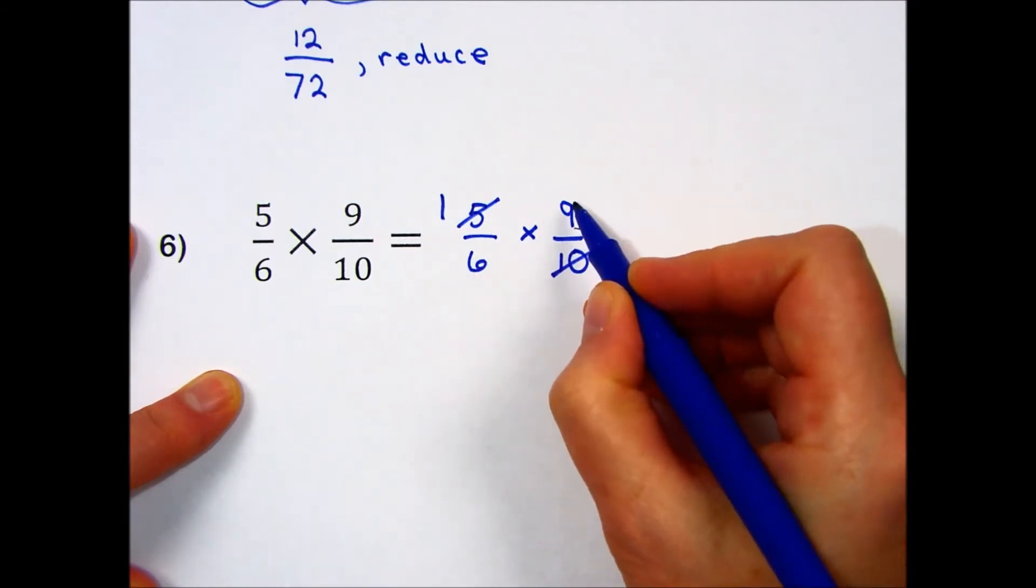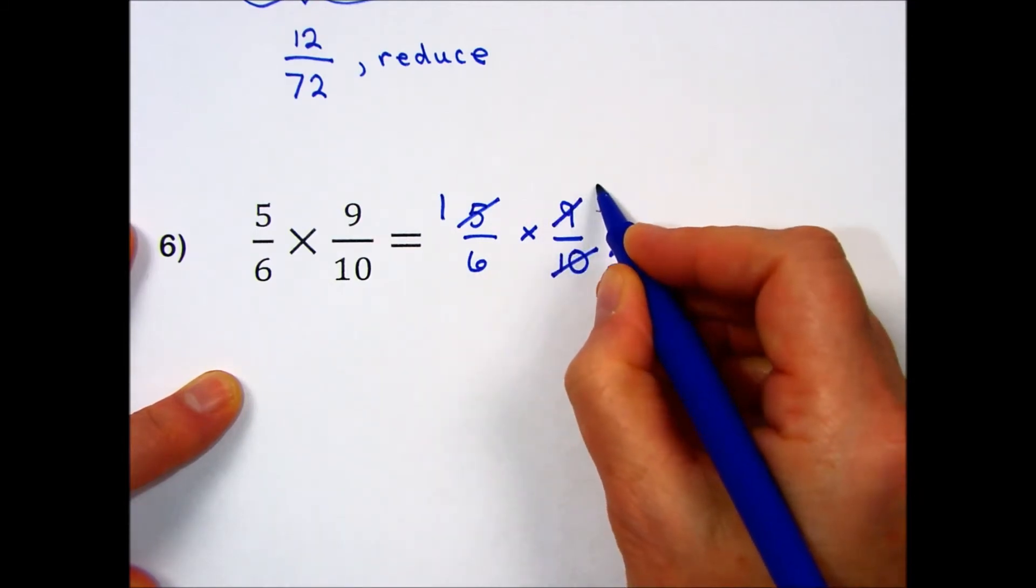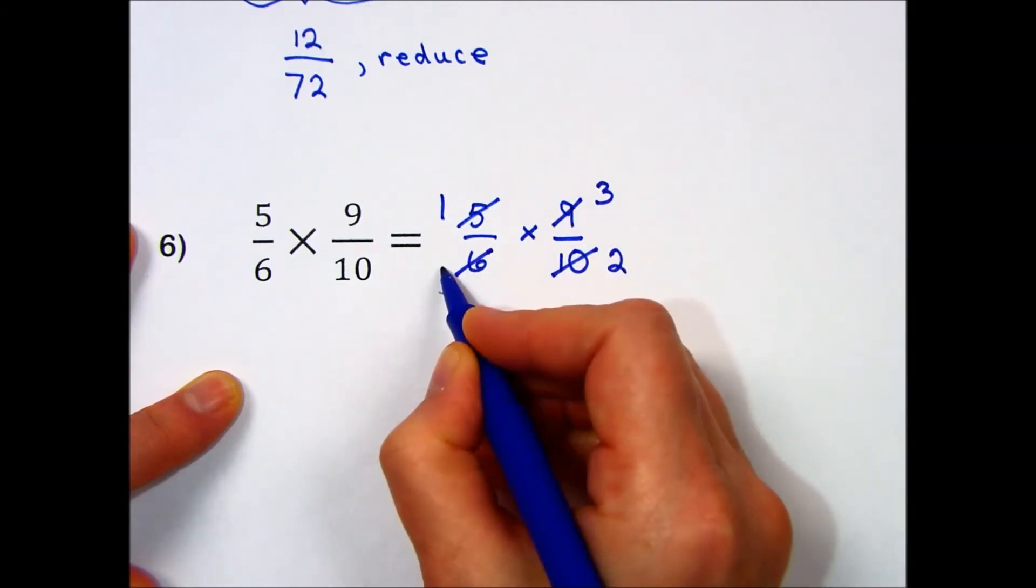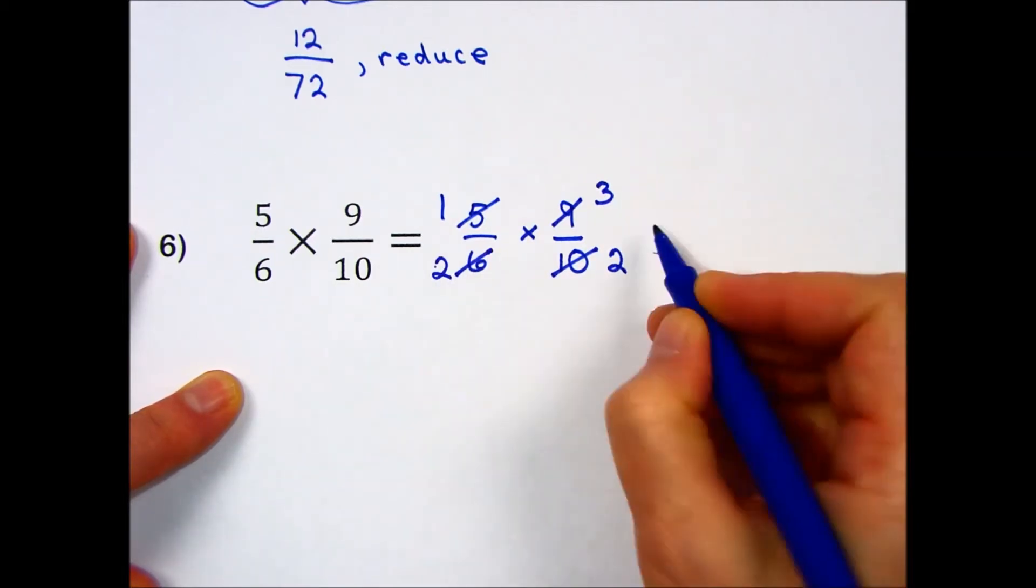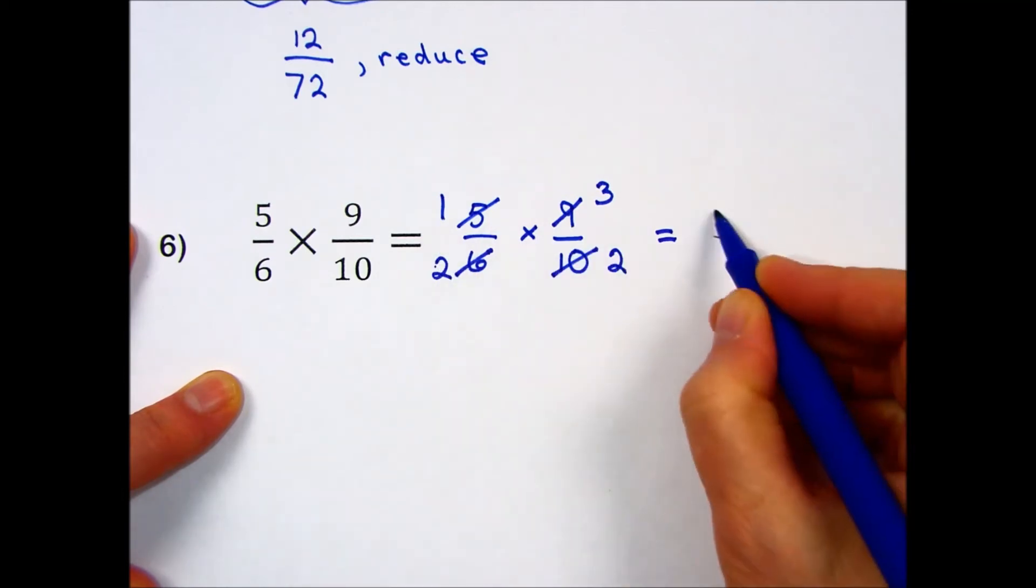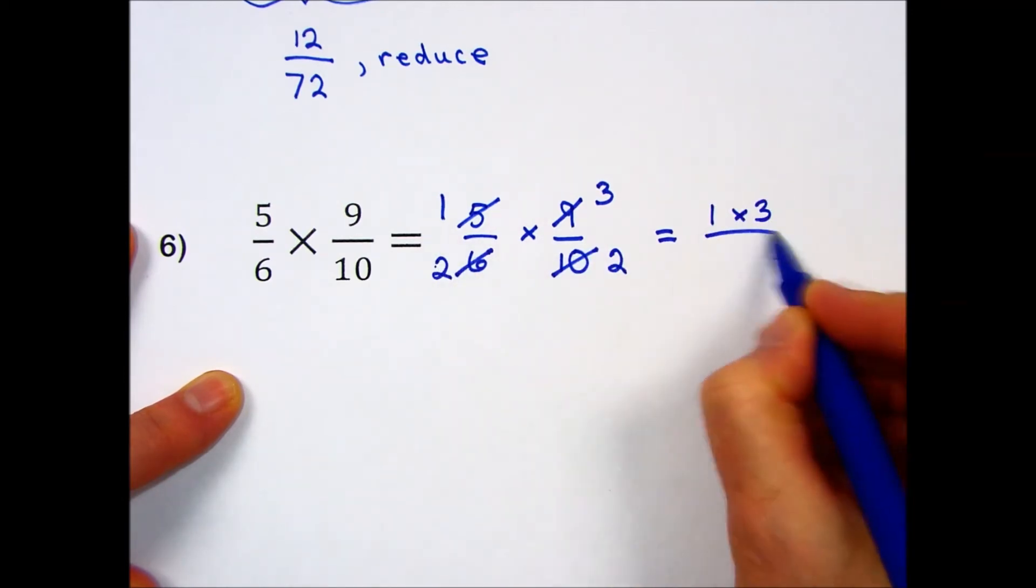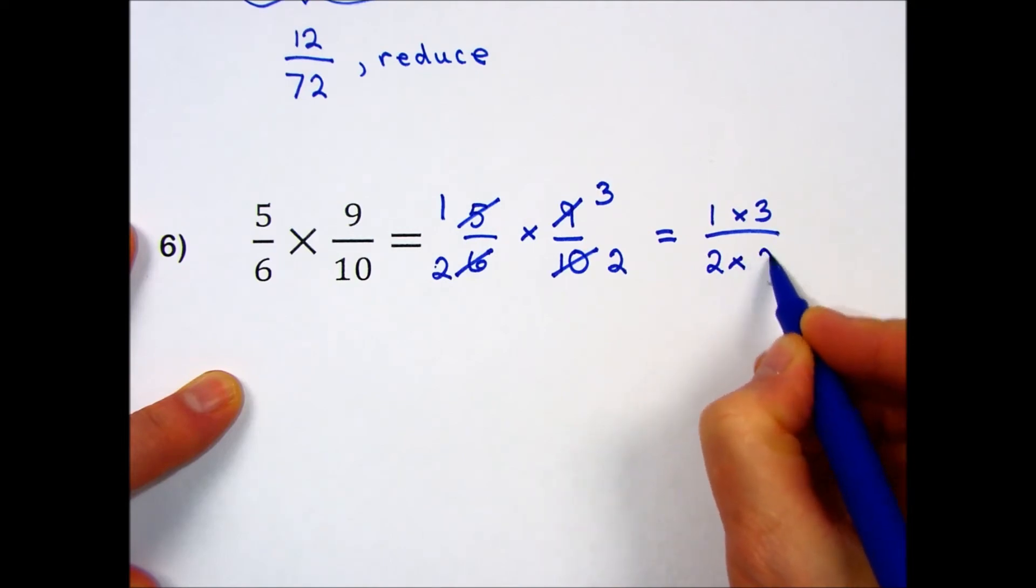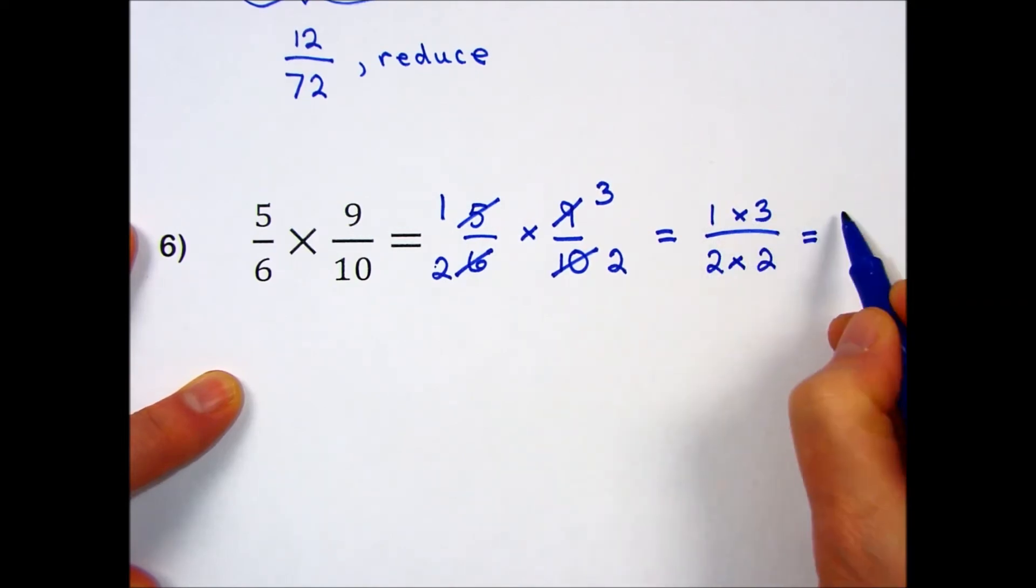And on this diagonal, 9 divided by 3 is 3. 6 divided by 3 is 2. Top times top. Bottom times bottom.